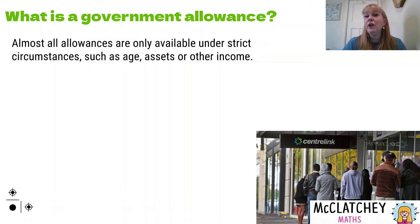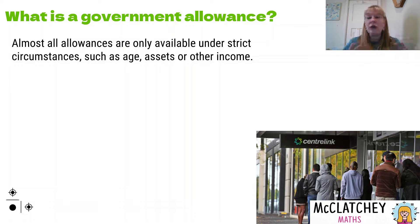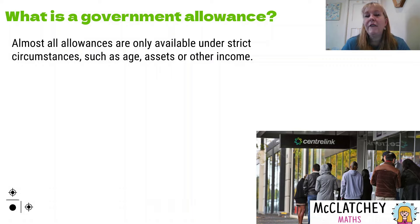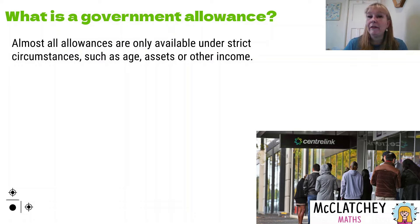They also want to know your income. So typically you need to report to the government — if you're getting these types of allowances — usually online once a fortnight, and tell them how much you earned over that period. Then they'll make adjustments to how much they pay you depending on how much you've earned elsewhere. They want it to be fair for everybody so that people don't cheat the system, and to make sure everybody gets the amount that they deserve.